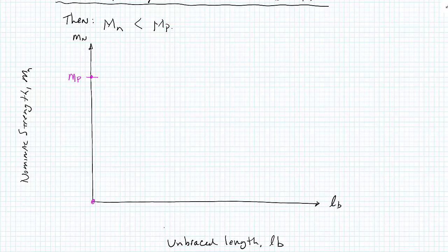MP at LB equals zero is its full strength. We can maintain that full moment capacity for unbraced lengths up to a point where we reach LP. LP comes from the tables, and it's documented for us. So right up to this point, we get a value, full moment capacity.